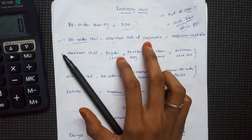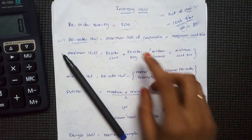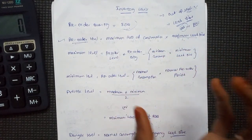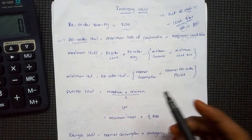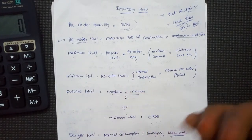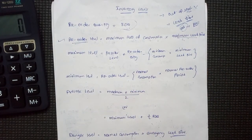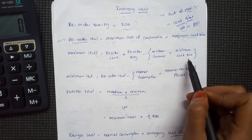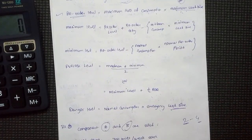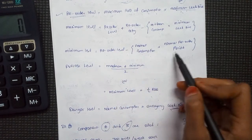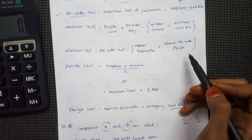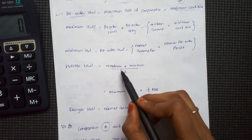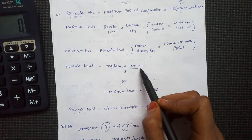The reorder level formula is: maximum rate of consumption multiplied by maximum lead time. For example, maximum lead time is 4 to 6 weeks, so the maximum is 6 weeks. The maximum level formula is based on reorder level plus reorder quantity minus minimum consumption into minimum lead time. Minimum level is: reorder level minus normal consumption multiplied by normal reorder period. For the average level, we add maximum plus minimum and divide by 2.